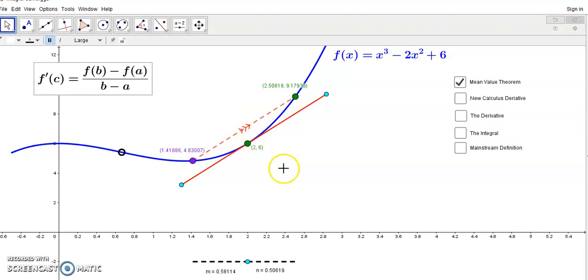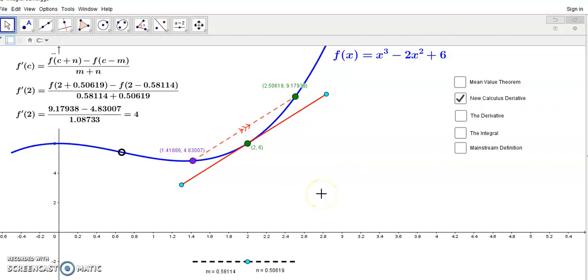And that's not the remarkable part of it, by the way. The remarkable part is that there is a relation between the horizontal distances, as you see down here, m, n, and the point of tangency.